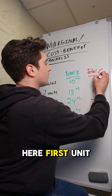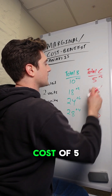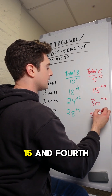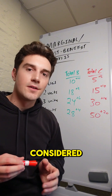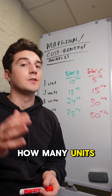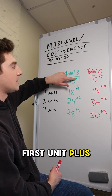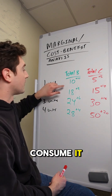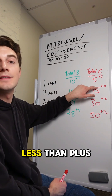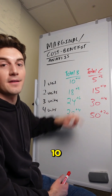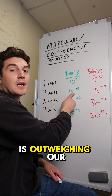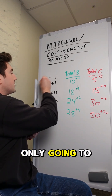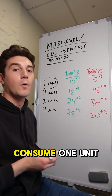For our costs: the first unit has a marginal cost of 5, second is 10, third is 15, and fourth is 20. With this considered, how many units should we consume? For our first unit, marginal benefit of 10 is greater than marginal cost of 5, so we're going to consume it. For our second unit, marginal benefit of 8 is less than marginal cost of 10 — our marginal cost is outweighing our marginal benefit. So in this scenario, we are only going to consume one unit.